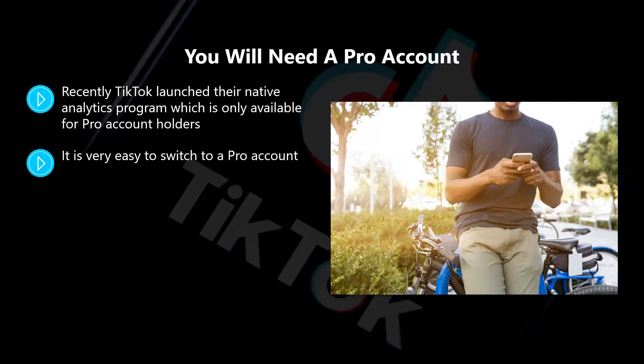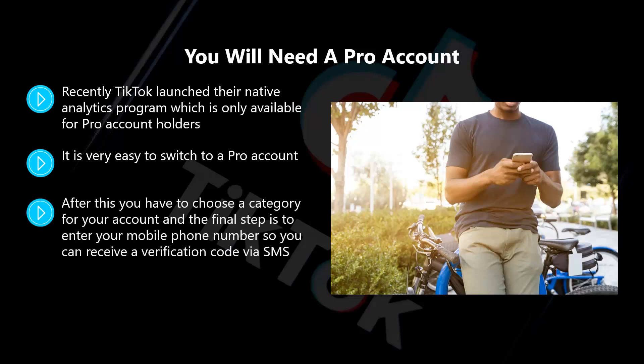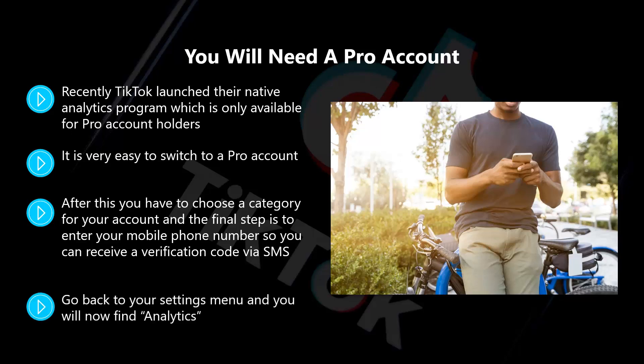It is very easy to switch to a pro account. Just go to your profile settings and tap on 'Manage My Account.' On the next screen, tap on 'Switch to Pro Account.' After this, choose a category for your account, then enter your mobile phone number to receive a verification code via SMS. Enter the code and you're good to go.